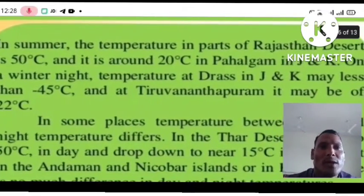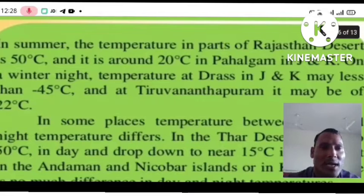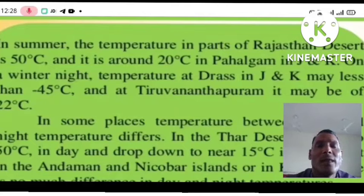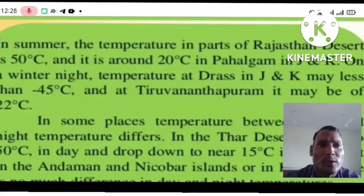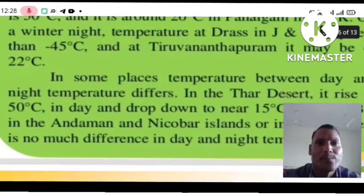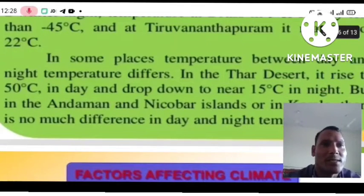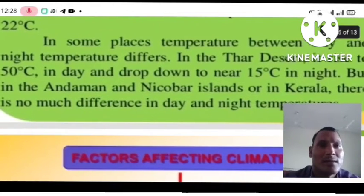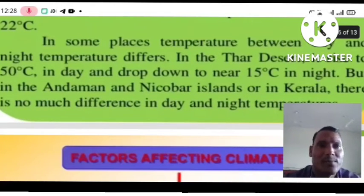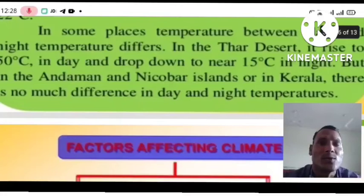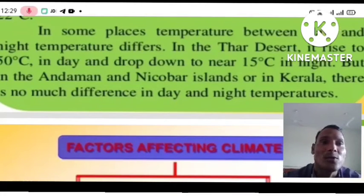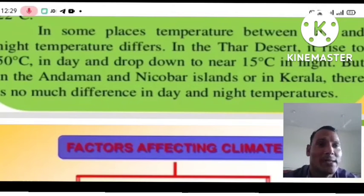It is around 20 degrees centigrade in Pahalgam in Jammu and Kashmir. On a winter night, the temperature at Drasa in Jammu and Kashmir may go below minus 45 degrees centigrade, while at Thiruvananthapuram in Kerala it may be 22 degrees centigrade. In some places, the temperature between day and night differs greatly. In the Thar desert, it rises to 50 degrees centigrade in the day and drops to near 15 degrees centigrade at night.